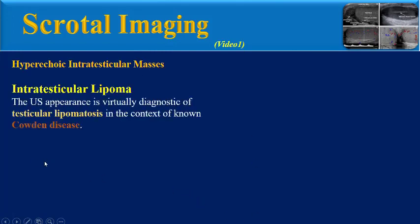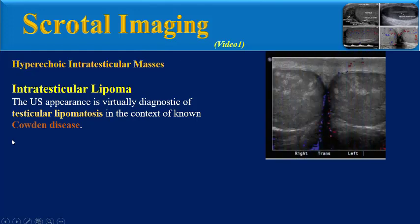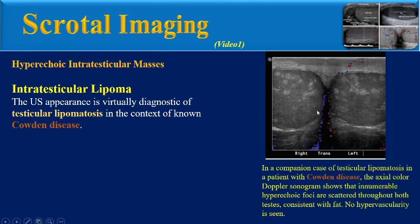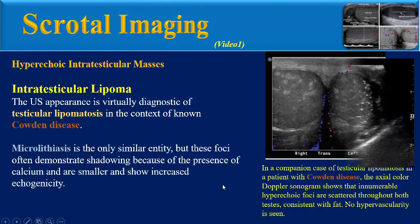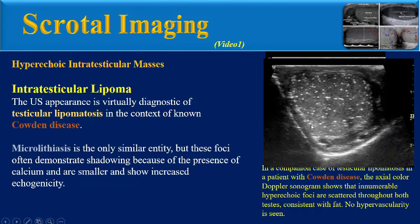Another form of intratesticular lipoma is testicular lipomatosis. The ultrasound appearance is virtually diagnostic of testicular lipomatosis in the context of known Cowden disease. This axial color Doppler ultrasound shows innumerable hyperechoic foci scattered throughout both testes, consistent with fat. Microlithiasis is the only similar entity, but those foci often demonstrate shadowing due to calcium and are smaller with increased echogenicity.